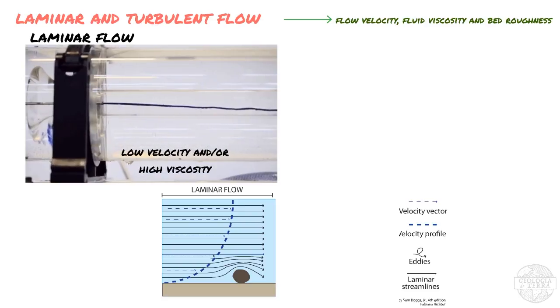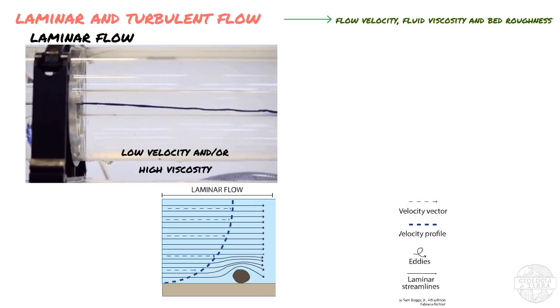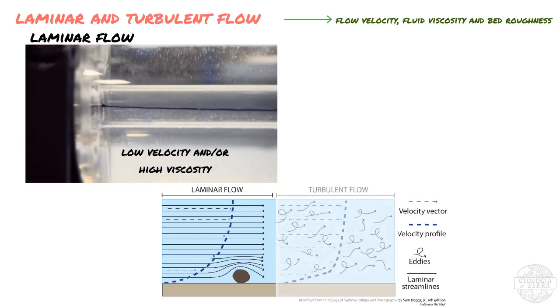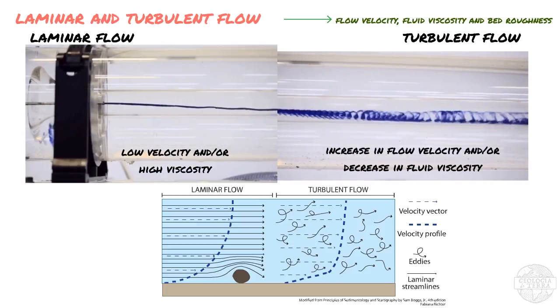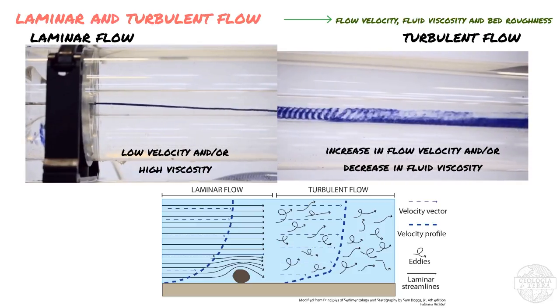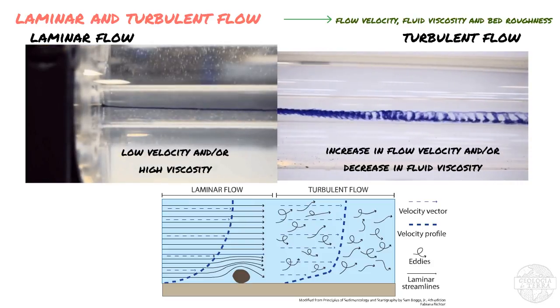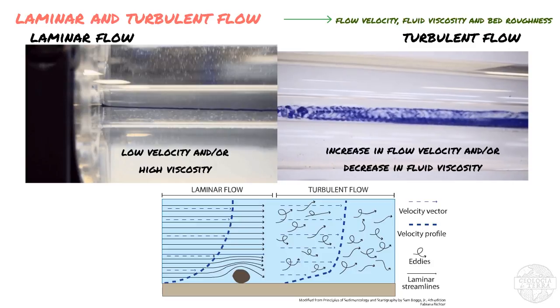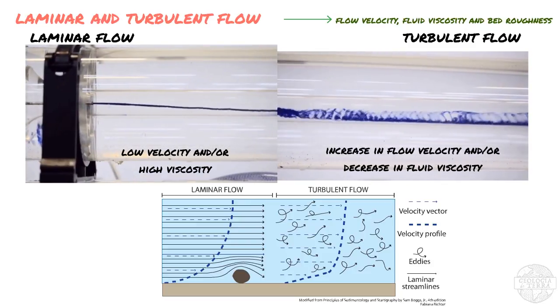It occurs when the flow velocity is low and the bed over which it moves is smoother. Now when the flow velocity increases, or the viscosity of the fluid decreases, the dye stream breaks down and becomes highly distorted. This generates fluid transport that is perpendicular to the main flow direction. This characterizes a turbulent flow, where the streamlines move in a complex way.